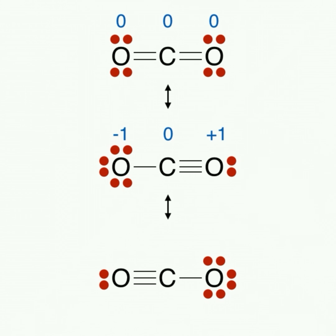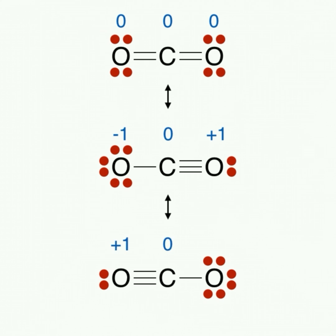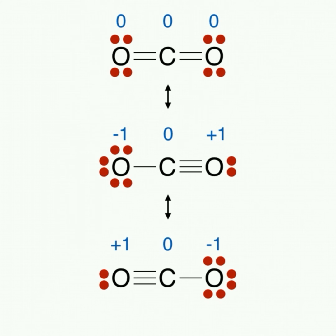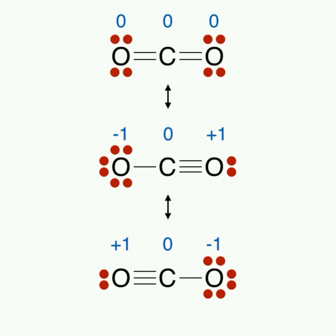The charges in our third structure will be very similar to our second structure. The first oxygen will have a charge of positive one, carbon will have a charge of zero, and our third oxygen will have a charge of negative one. Once again, our first structure has the lowest formal charges, meaning it contributes most to the true structure of the compound. Our second and third structures will contribute less than the first, but they are equivalent to each other and will contribute equally.